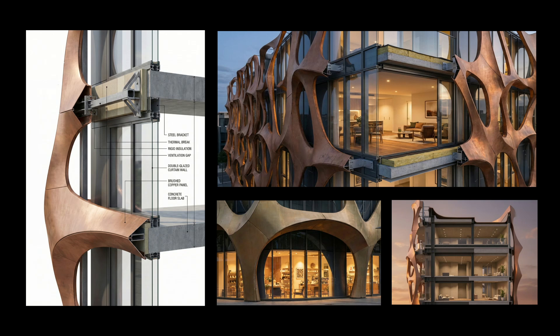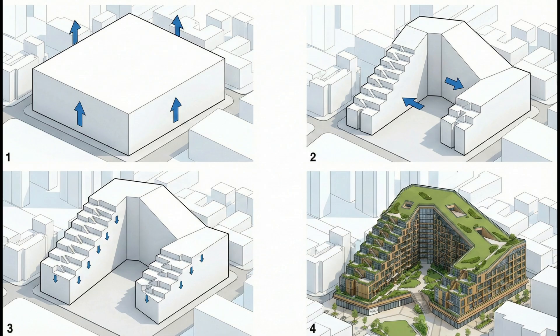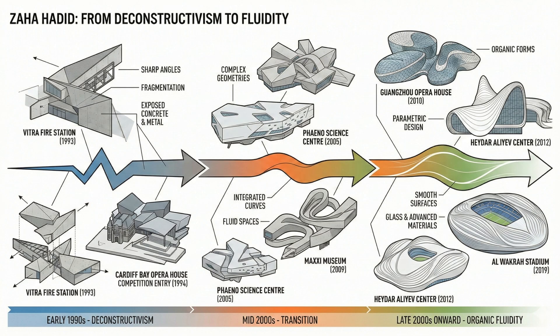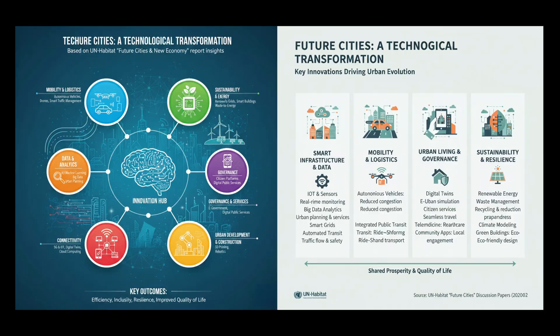Gemini 3, with help from Nano Banana, makes it very easy to create smart diagrams and infographics — not just good-looking ones, but ones that actually help you explain things better. You can use your own designs and break them down through parts, or whip up general infographics like timelines using fresh data from the internet to make concepts clear. Let's go through a few examples to see the potential and the limitations.